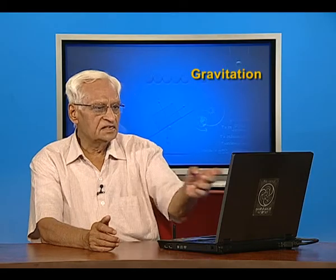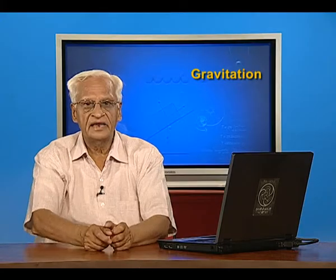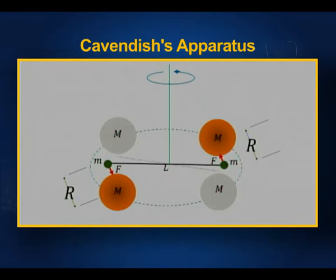The large balls placed near the small balls exert gravitational forces on them. These forces are equal and opposite and form a couple which tends to rotate the beam. Because of the deflection in the beam, the suspension undergoes rotation which produces a restoring couple. The distance between the large mass and the small mass is R, and the length of the beam is L. When the balls are in one position the beam deflects one way; in the opposite position it deflects the other way, and the mean of several observations is taken.